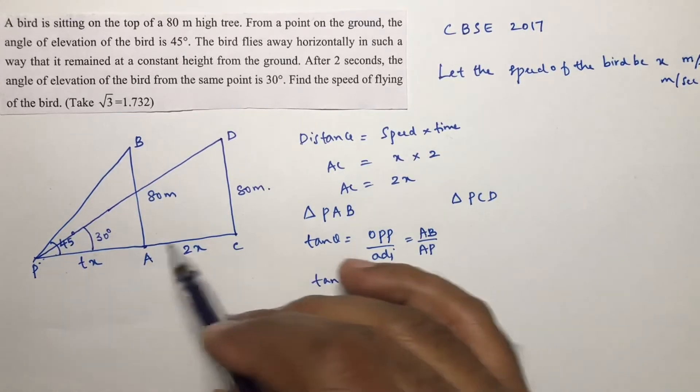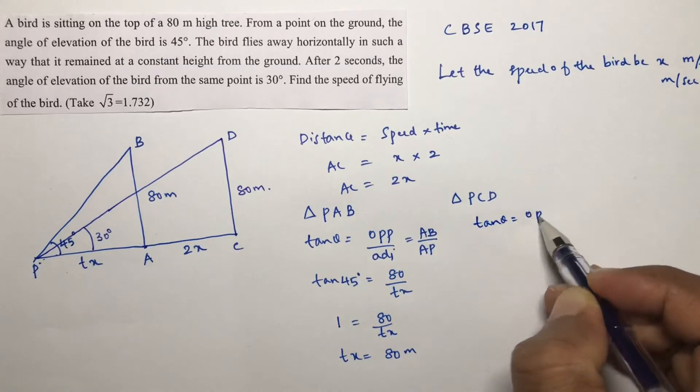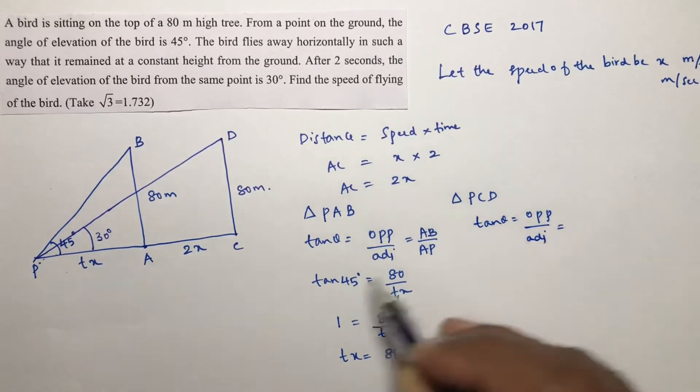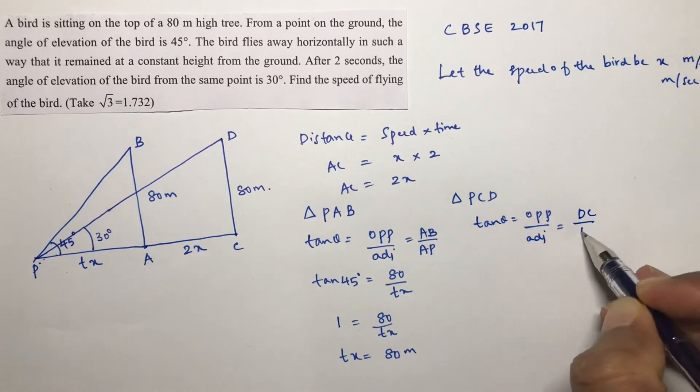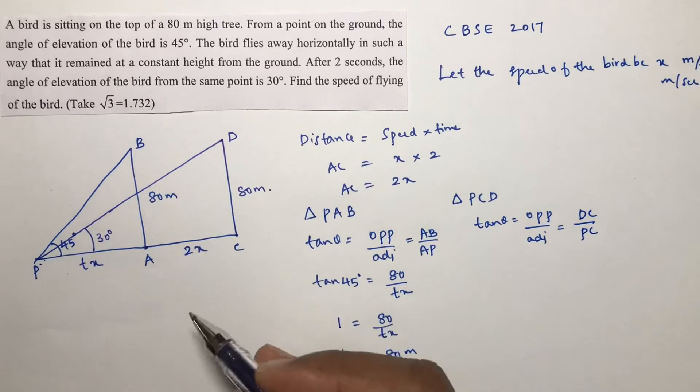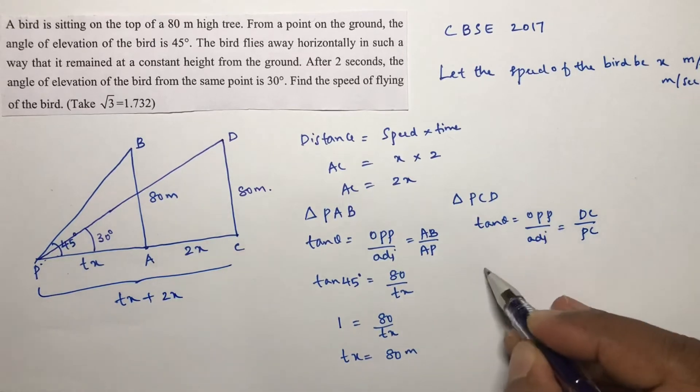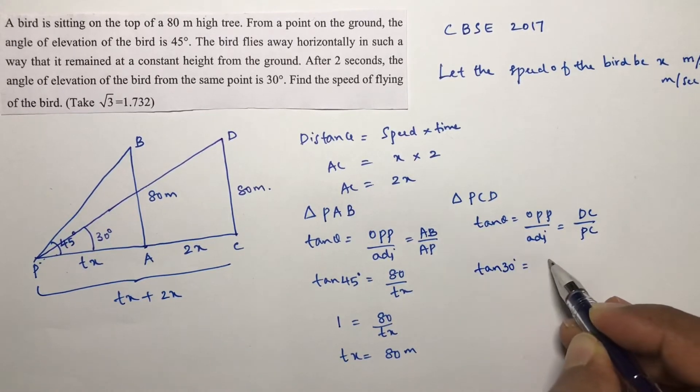This distance is 80 meters. In this triangle PCD, tan theta, opposite by adjacent.